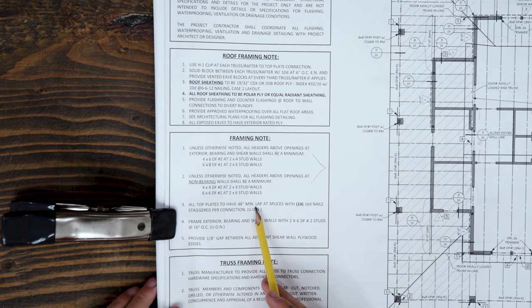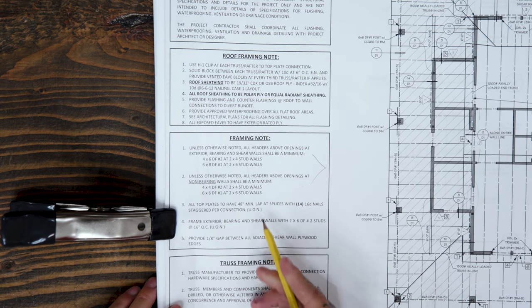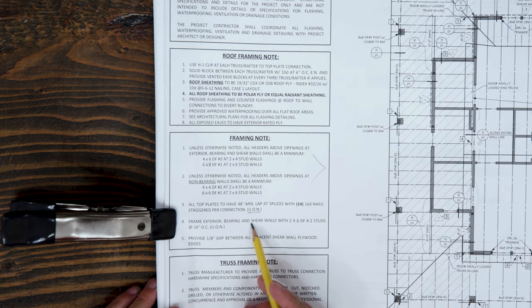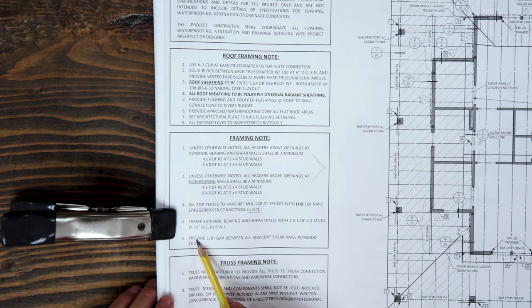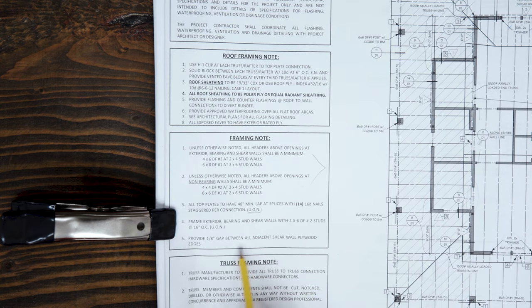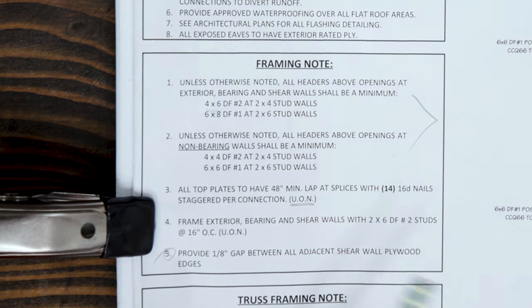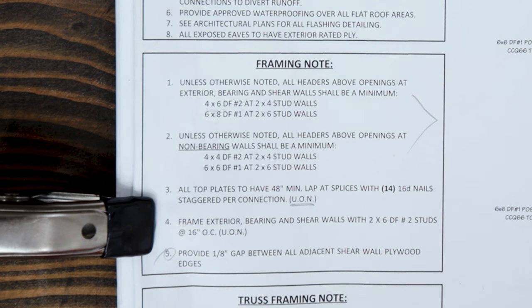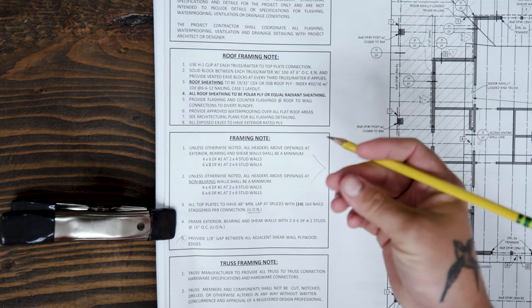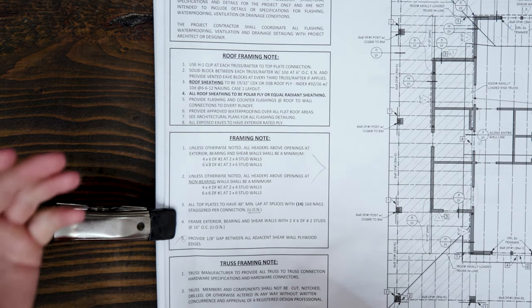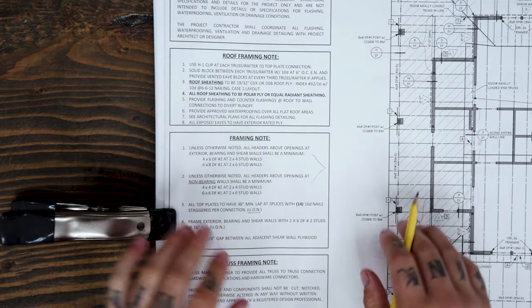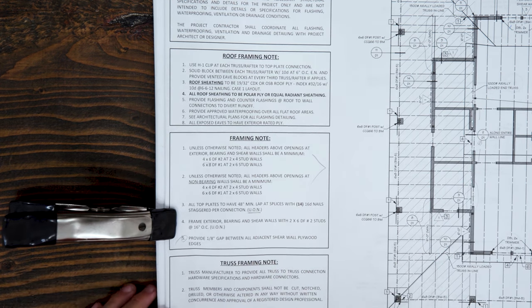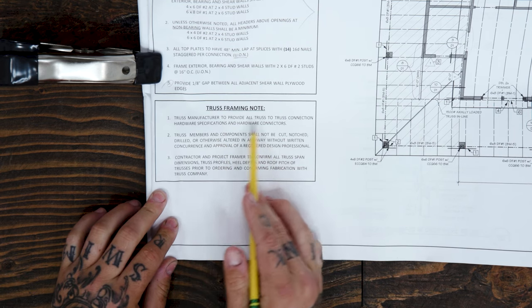All top plates to have minimum 48-inch lap splices with 14 16Ds staggered per connection unless otherwise noted. Frame exterior bearing and shear walls with 2x6 stud grade number two studs at 16 on center — pretty common. Provide 1/8-inch gap between all adjacent shear wall plywood edges. Most people slam their sheets tight, but as moisture, heat, and cold affect the building and elements expand and contract, you'll end up with buckling and sheets will pop out.